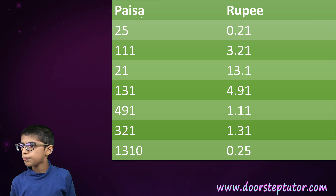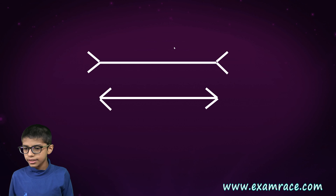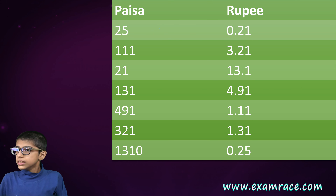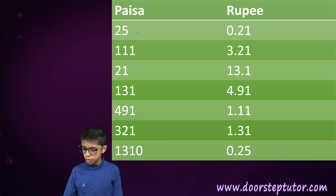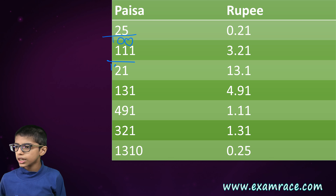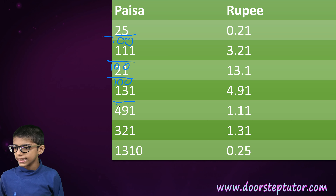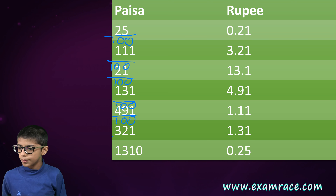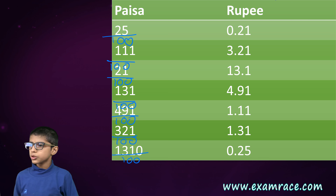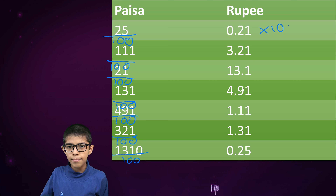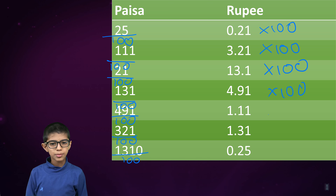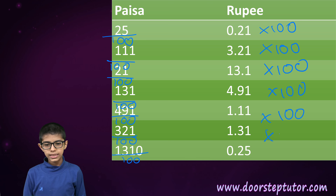Now from rupees to paisa and back. To convert paisa into rupees, the simple formula is to divide by 100. To convert rupees into paisa, we multiply by 100. How simple it is!